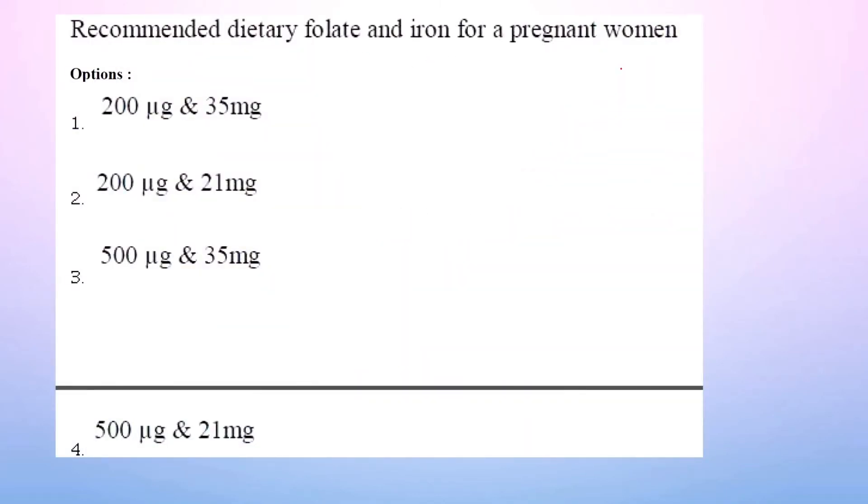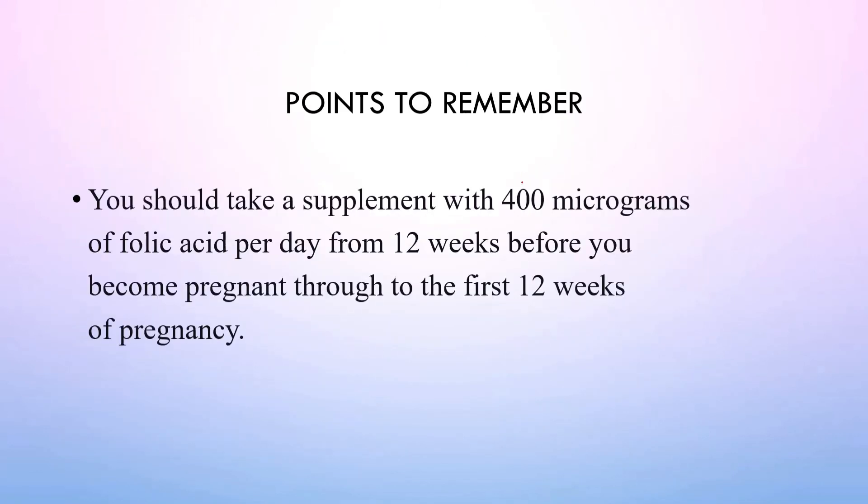Recommended dietary folate and iron for pregnant women. The correct option will be 500 microgram to 35 mg. Another memory-based question. Here are some points: 400 mcg folic acid supplements for 12 weeks. If we have a pregnancy plan, we will increase the folate level in our diet, that is 400 mcg. Because low folate levels can lead to abnormalities in child formation. So if planning pregnancy, increase folic acid content to 400 mcg.